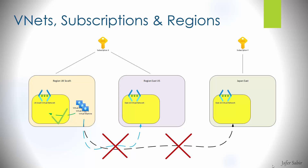When designing virtual networks it's important to understand Azure subscriptions, regions, and network resources. Anything you create in Azure is a resource — a virtual machine, a network interface card, a public IP address. A region is basically a set of data centers, and a subscription is linked to an account and is like a container used for billing purposes. Resources are created within an Azure region and subscription.